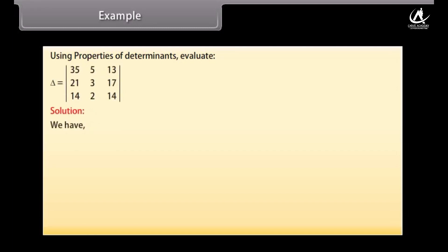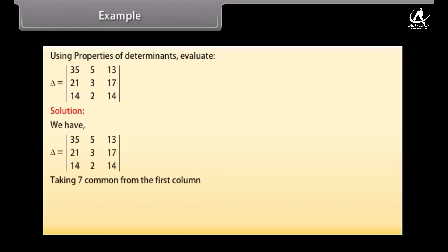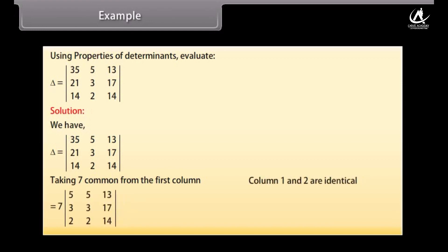Example using properties: By taking 7 common from the first column, column 1 and column 2 become identical, so the value of the determinant is 0. Therefore the result equals 7 × 0 = 0.